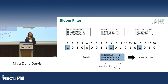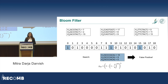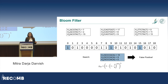Because this is a probabilistic data structure, what can happen is that when you search for a k-mer that hasn't been inserted yet, its hash functions can point to positions that were already flipped by other k-mers.